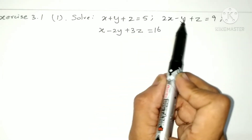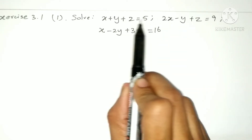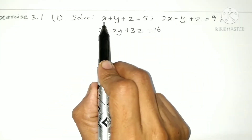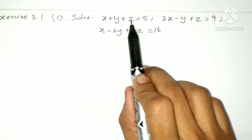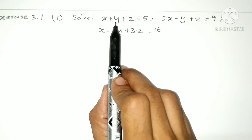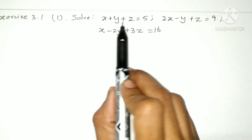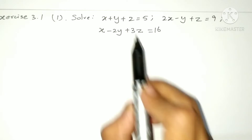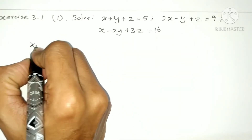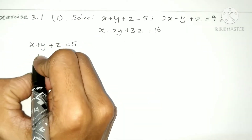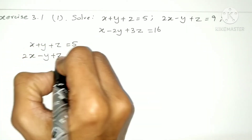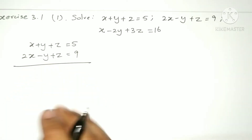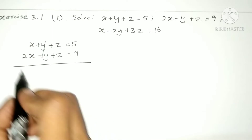First, what do we do? We take two equations and cancel one variable. We'll cancel the y variable. We have y and minus y, so they cancel. Be sure you cancel one variable, and then cancel the same variable again in another pair of equations.